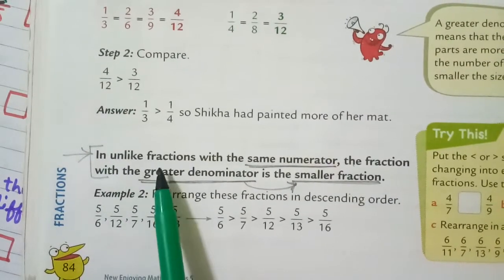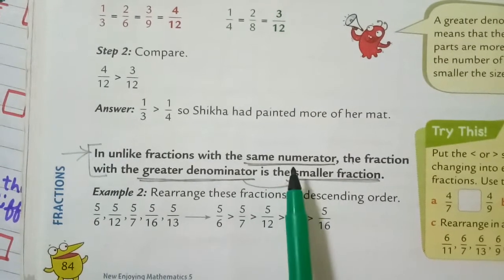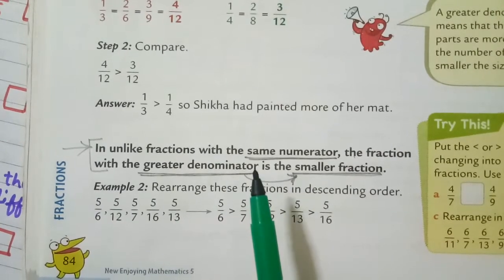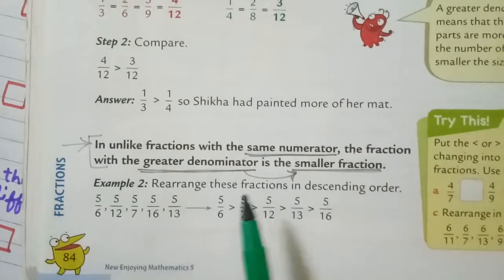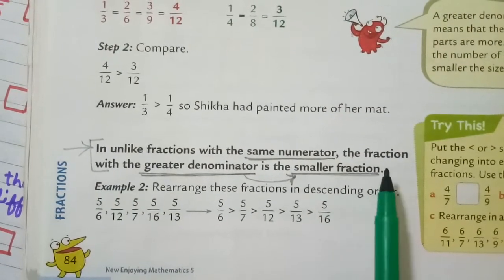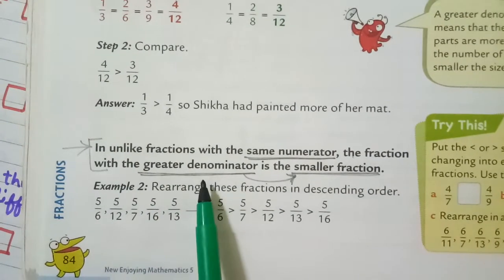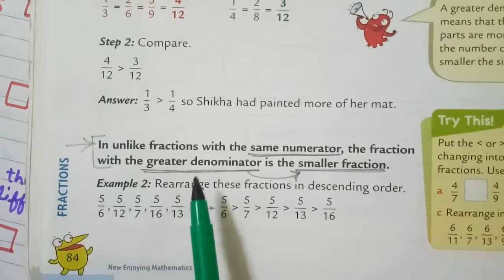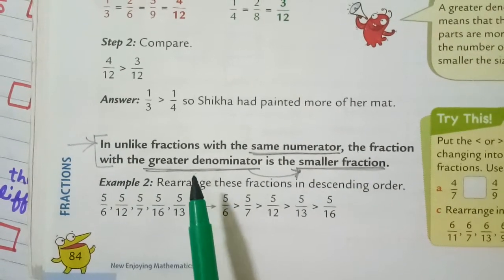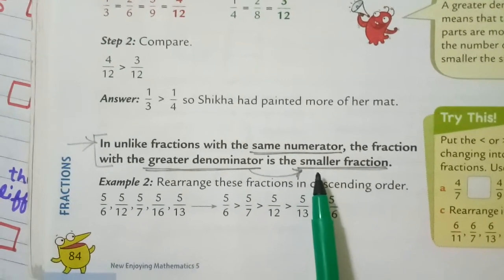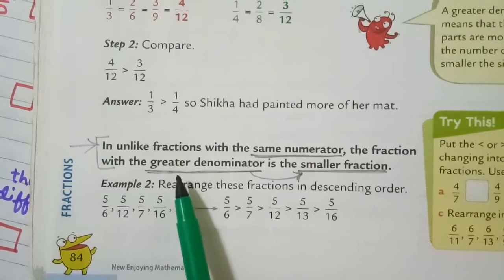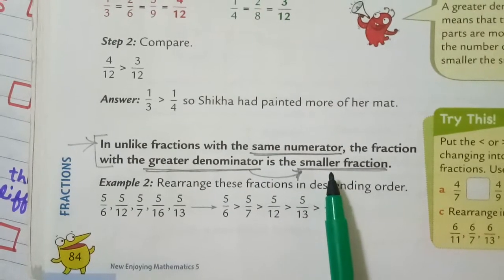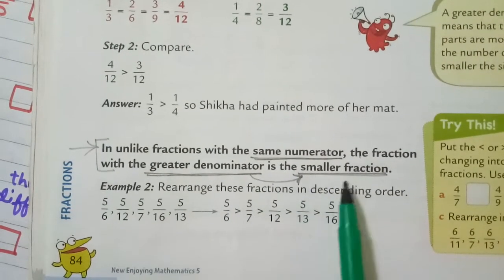So if the denominators are different but the numerators are same, how can we find out the greater or smaller fraction quickly? We have to just see the fraction with the greater denominator. Wherever the fraction has the greater denominator, that fraction will be the smaller fraction. It is just opposite - greater denominator, smaller fraction.